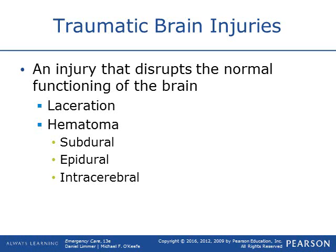With traumatic brain injuries there can also be lacerations — actual cuts to the brain from direct injuries — as well as hematomas, which are brain bleeds. There are three types: subdural, epidural, and intracerebral brain bleeds.